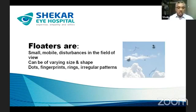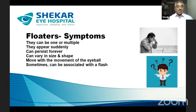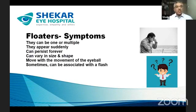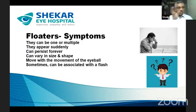Floaters are best observed against a well-lit white or off-white wall or open sky. They can be single or multiple and usually appear suddenly — one day you have none, and the next you're seeing one or two. One thing that is really problematic is that they can persist forever. Their apparent size changes based on distance from the retina, and they move with the movement of the eyeball with a lag period.